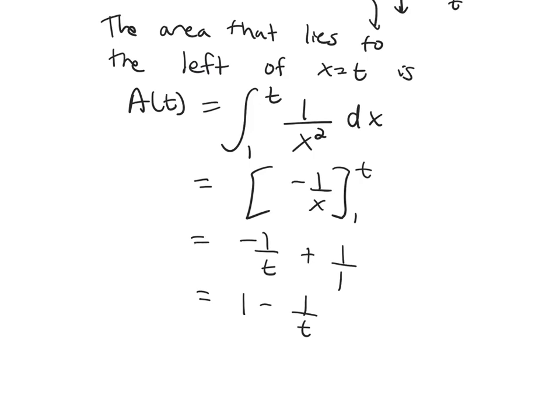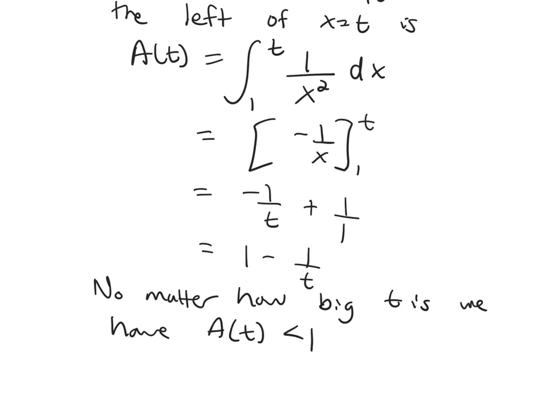So no matter what value of t we pick, t is bigger than 1, this A(t) is always going to be less than 1, because you're subtracting something away from 1. So no matter how big t is, we have A(t) is less than 1, because A(t) is 1 minus 1 over t. So you're always, when you plug in a value for t, you'll always get something smaller than 1 now. T can't be less than 1. We're picking it so that it's bigger than 1, because we want it to be to the right of 1.